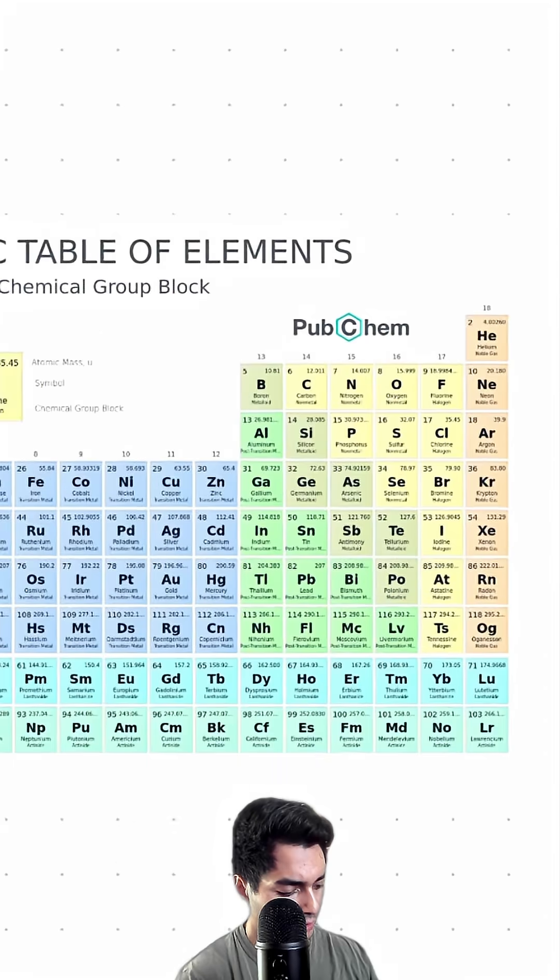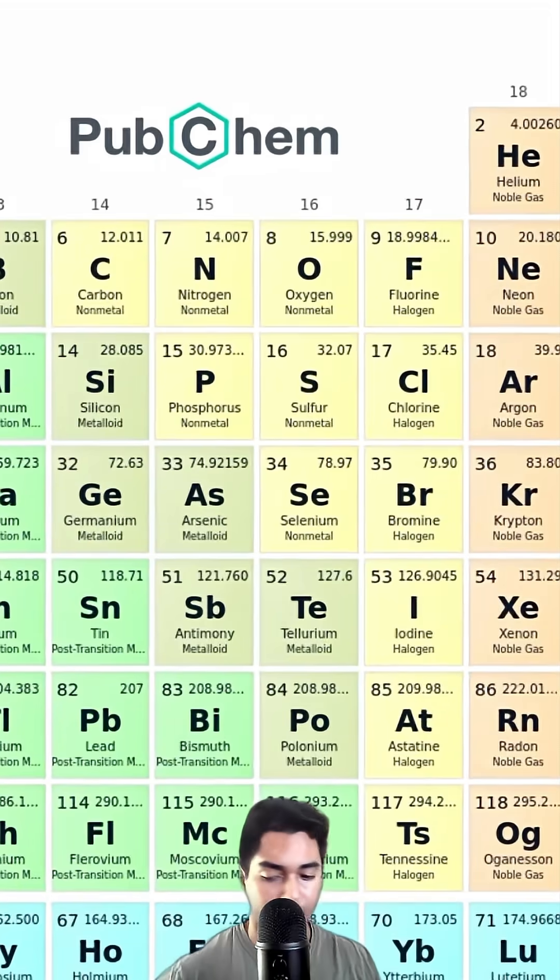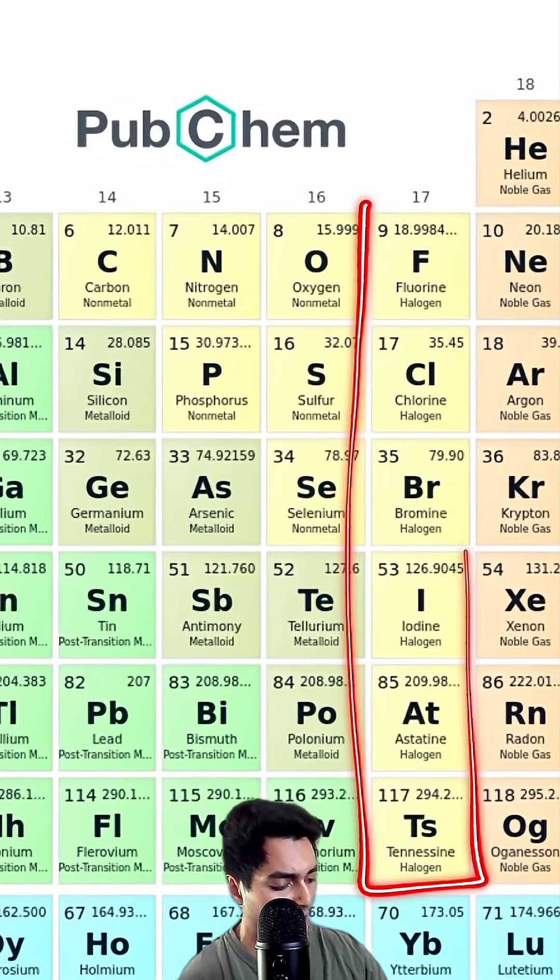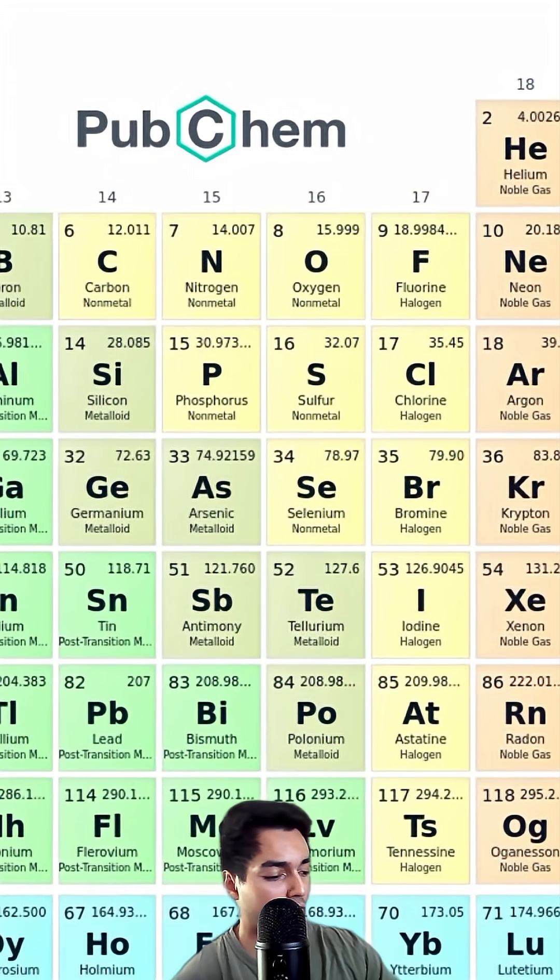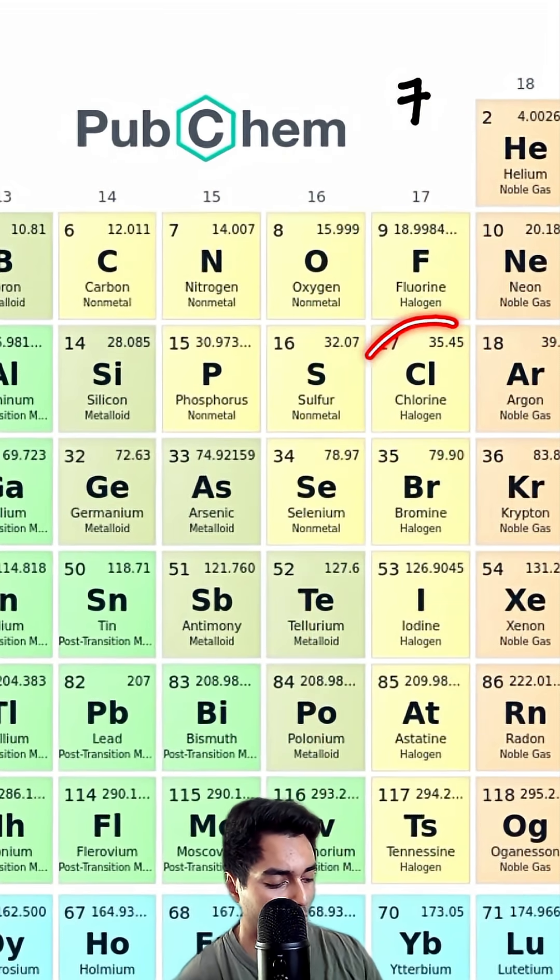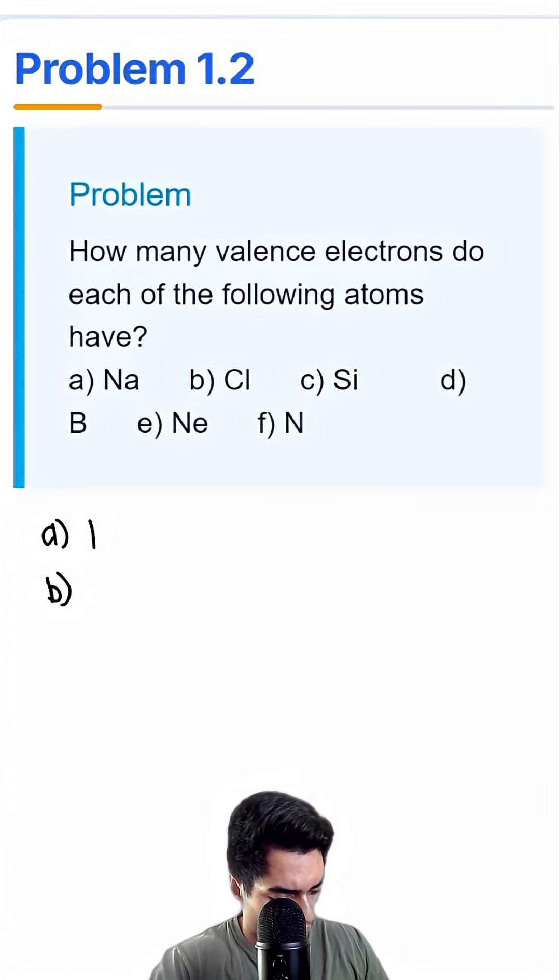Next, we have chlorine. Chlorine lives all the way here on the right hand side. These are known as the halogens, and all the halogens are really close to filling their octet but not quite there. So these all have seven valence electrons. Chlorine lives right here, so it has seven.